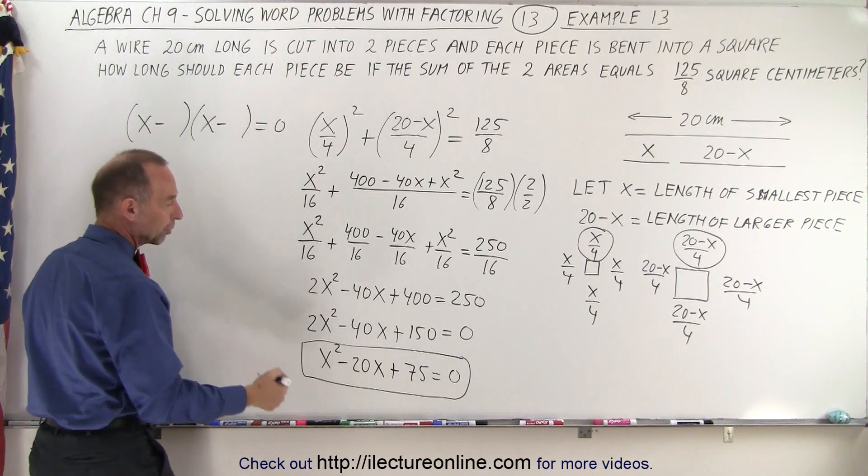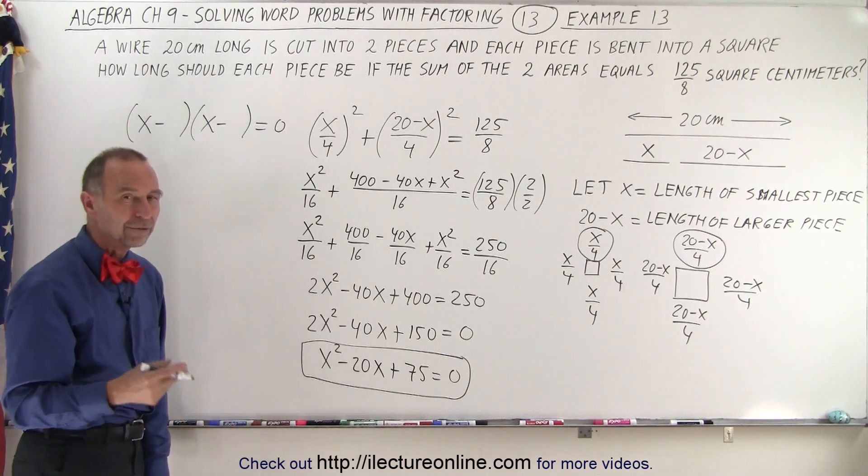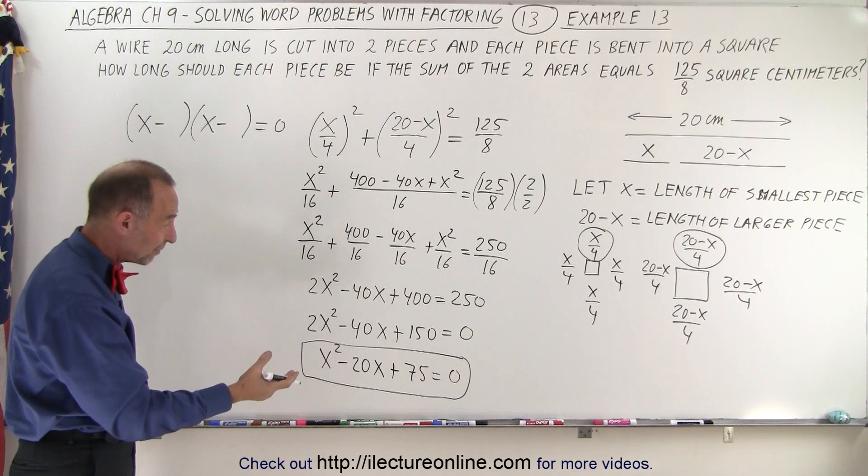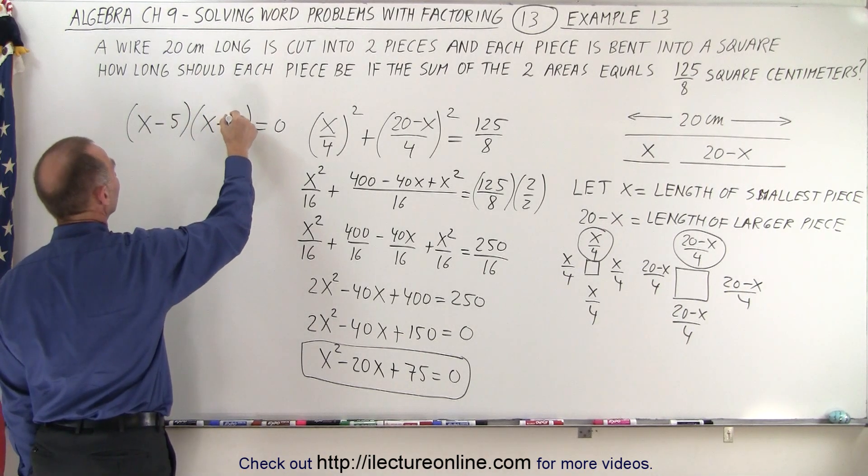We're looking for two numbers. When we multiply, we get 75. When we add, we get 20. And I think 5 and 15 works. 5 times 15 is 75, and 5 plus 15 is 20. So 5 and 15.